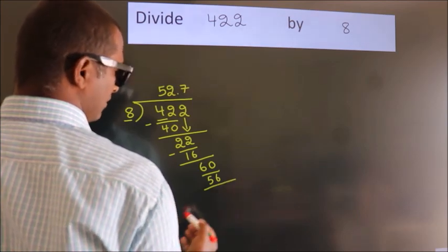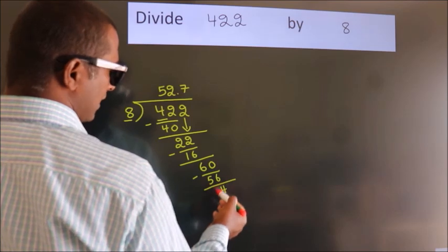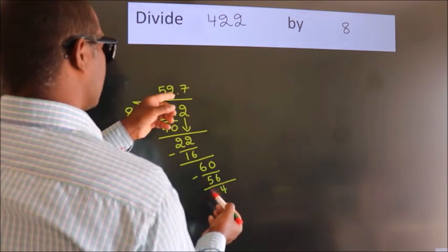Now we subtract. We get 4. After this, we already have the decimal.